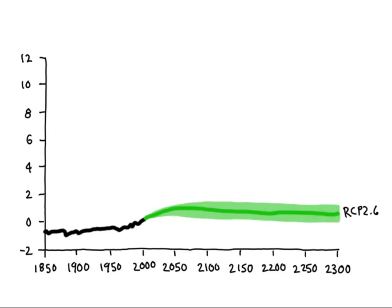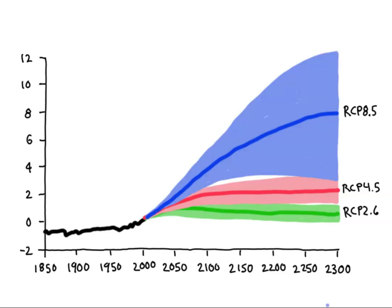But recall that to get a radiative forcing of 2.6 watts per meter squared, that scenario had to envision pretty significant and rapid cuts in greenhouse gas emissions. On the other hand, RCP 8.5 takes us to about 4 degrees of warming by 2100.